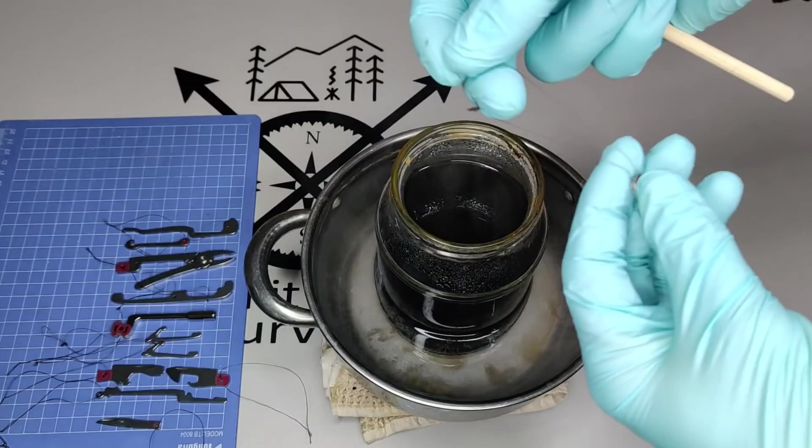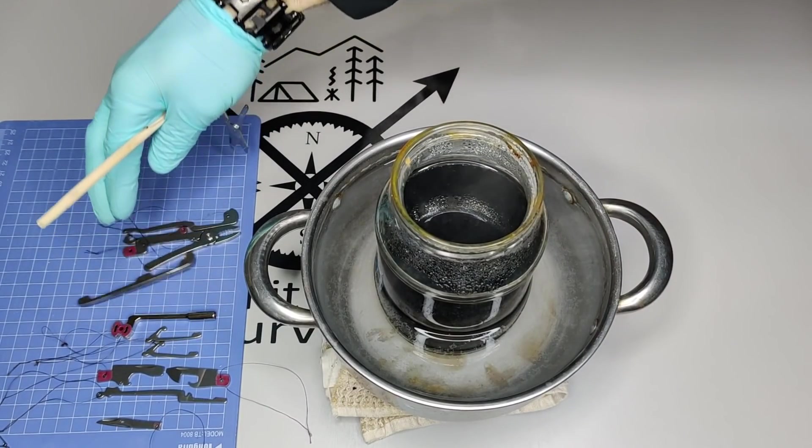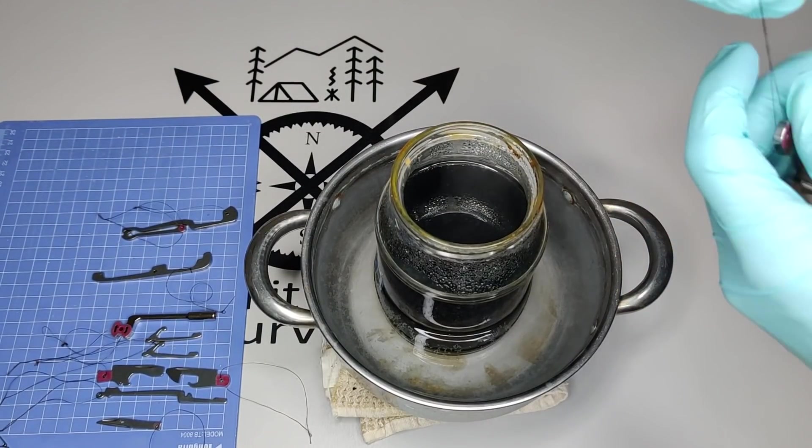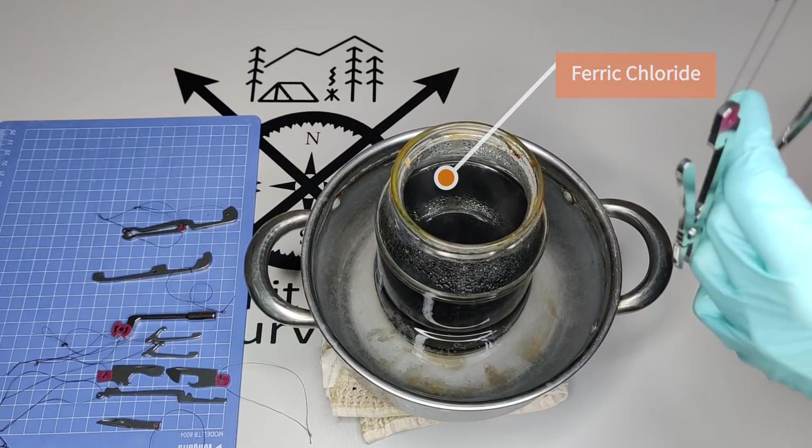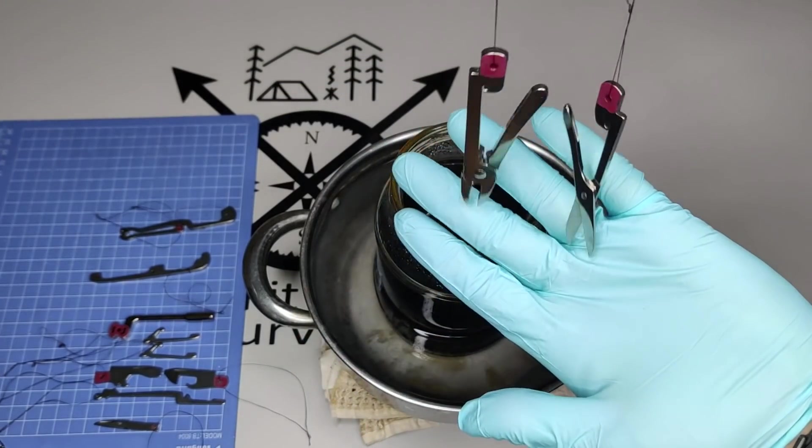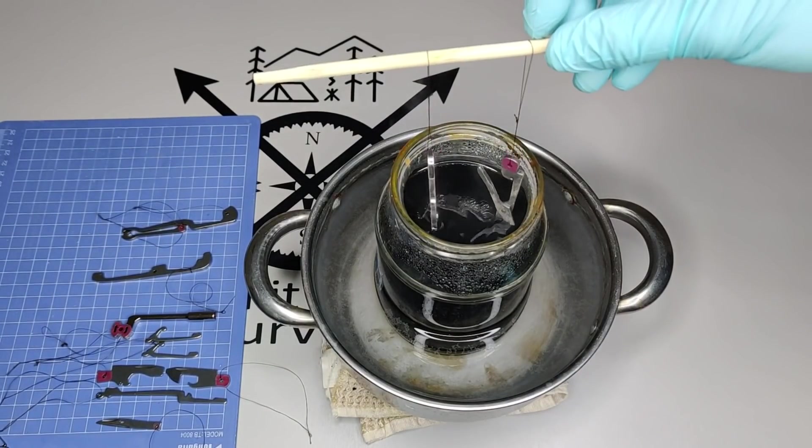All right, so what we'll do is we're going to hang these on here. Start with these two. All right, so just like that. I have them on a chopstick, a string, and we're just going to submerge this into the acid. We'll get about a minute and 30 seconds.